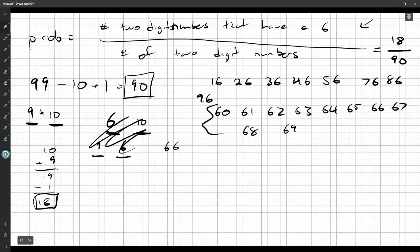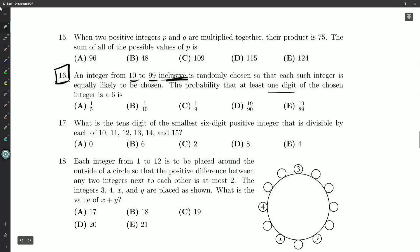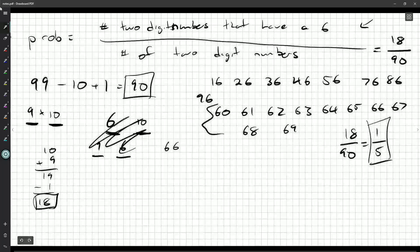But we're doing 18 out of 90, and we can simplify that by dividing top and bottom by 9. Actually, top and bottom by 18. It's going to be 1 out of 5. So that's the probability. One-fifth. One-fifth of the time you pick a number in this range, you're going to get a 6. And so that's answer A.